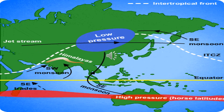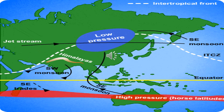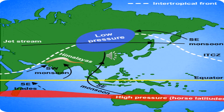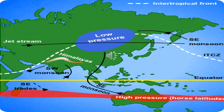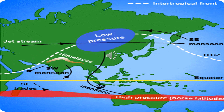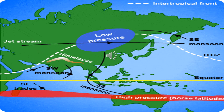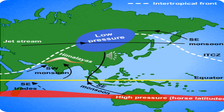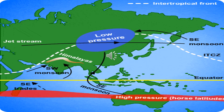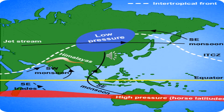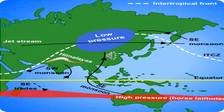As these winds have crossed a huge area — they have crossed India — by the time they reach Pakistan they have lost most of their moisture. When these winds reach Pakistan, they hit the northern mountains. It is the tail end of the monsoon system which affects the eastern part of Pakistan. As these winds hit the northern mountains, condensation takes place and rainfall occurs.